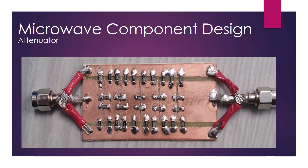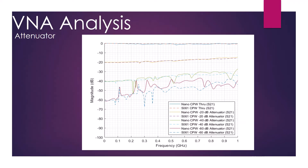Shown in this image is an attenuator of five stages that I designed and built. Five stages allow for large attenuation, which allows the dynamic range of the VNAs to be compared. This graph shows the Nano and Keysight being compared after each negative 20 dB attenuator stage is added.